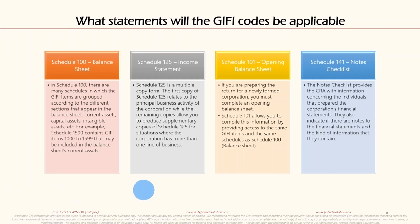Schedule 125 is the income statement and is a multiple-copy form. The first copy of Schedule 125 relates to the principal business activity of the corporation, while the remaining copies allow you to produce supplementary copies for situations where the corporation has more than one line of business. These two — Schedule 100 and Schedule 125 — are the primary ones used in every organization.